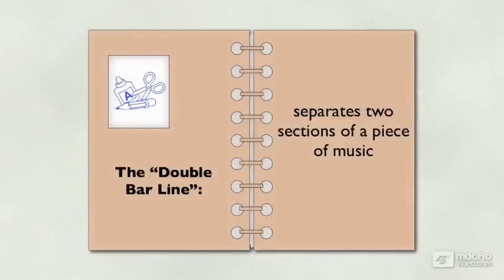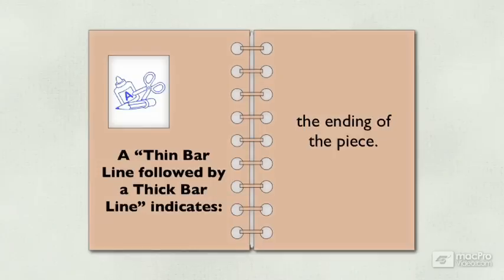The double bar line separates two sections of a piece of music. A thin bar line followed by a thick bar line indicates the ending of the piece.